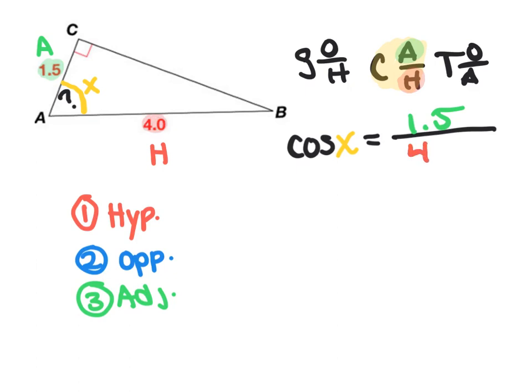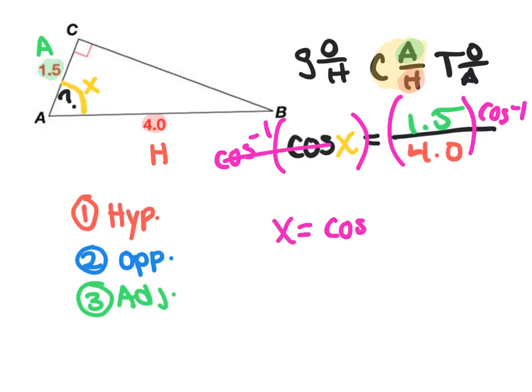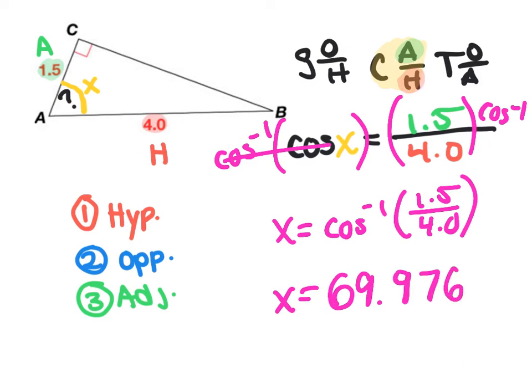To solve I'm going to have to use the inverse trig functions. If I take inverse cosine of both sides, the cosine cancels so it becomes x equals inverse cosine of 1.5 over 4.0. Inverse cosine 1.5 divided by 4.0 gives you x equals 69.976 degrees.